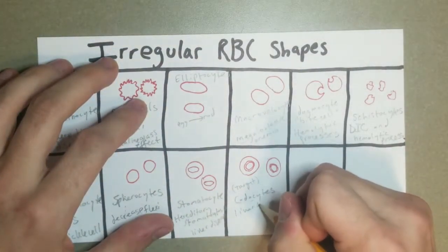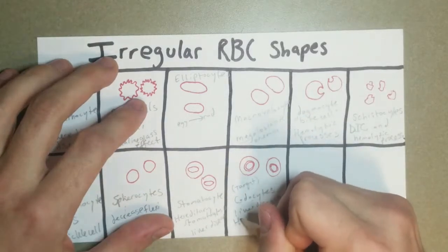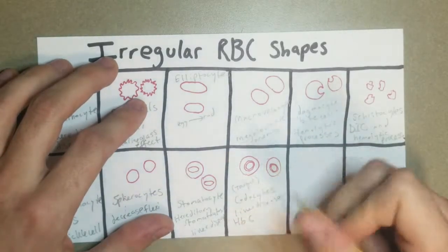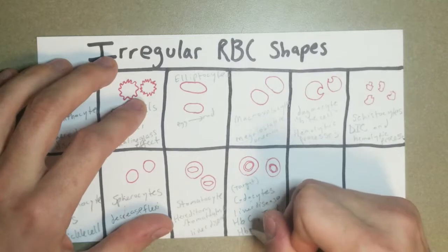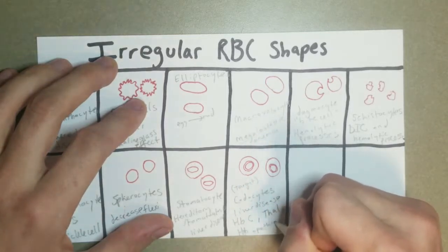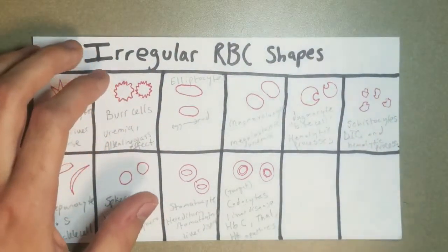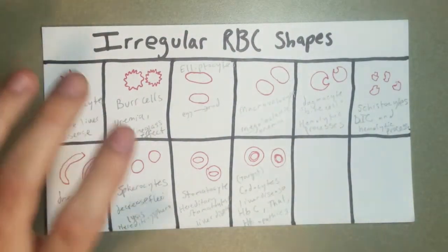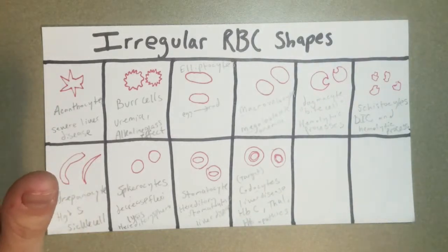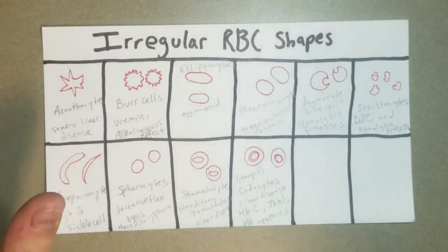You'll see these in liver disease, hemoglobin C as well is one, any kind of thalassemia, you could see them, and then hemoglobinopathies. In these, per LabCE, they kind of define it as, or they explain the cause as that the surface of the red cell is increased disproportionately to its volume. So, basically, that could be caused by a decrease in hemoglobin, as is seen in iron deficiency anemia, or an increase in the cell membrane.